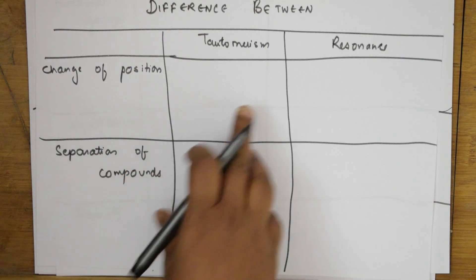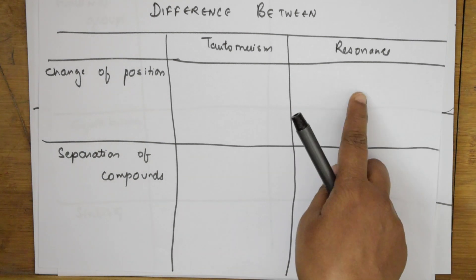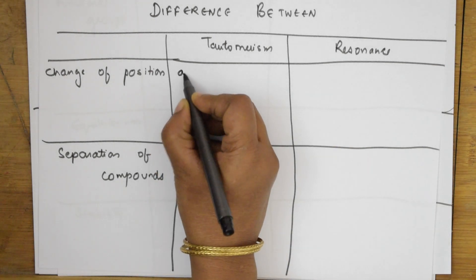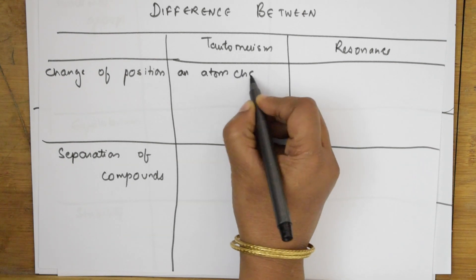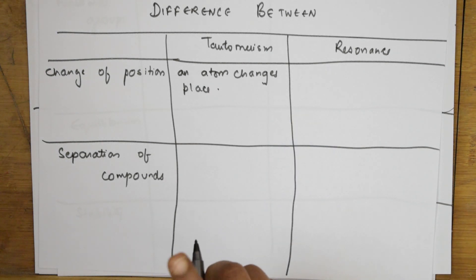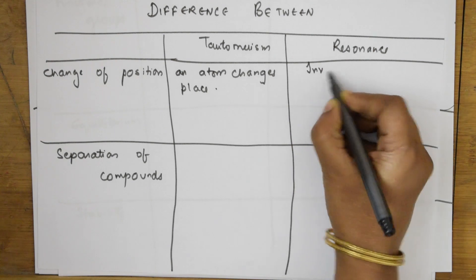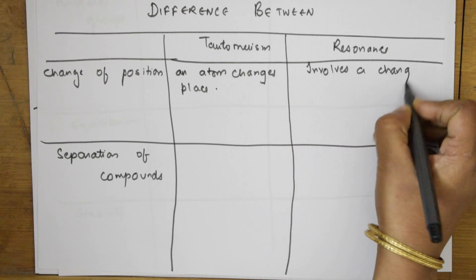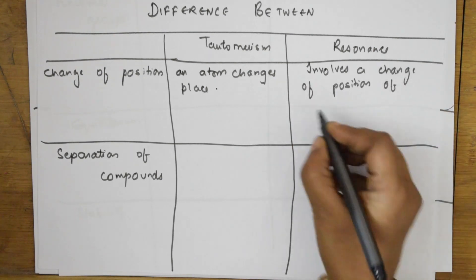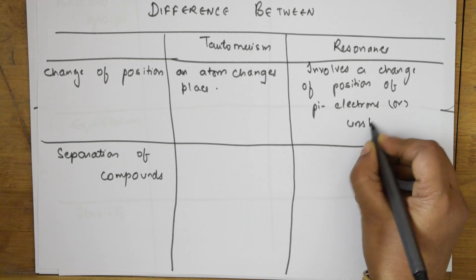The first criteria is the change of position. In tautomerism, an atom changes place — for example, from the keto form with a double bond to the enol form. But in resonance, it involves a change of position of pi electrons or lone pair (unshared) electrons.